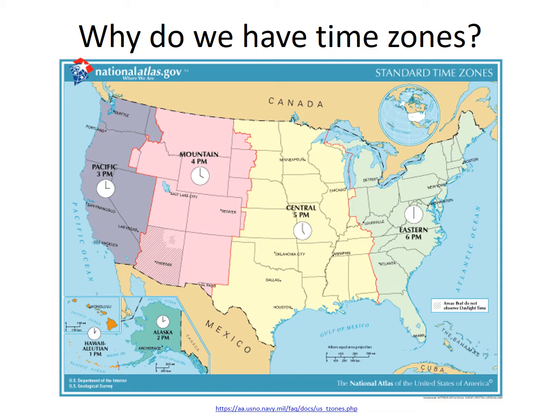Until the industrial age and spurred by travel, the time of day was a local matter. Every town set its official clock, if it had one, according to the local position of the sun. This served sufficiently until the introduction of the steam engine and rail travel, which made it possible to travel fast enough over long distances to require almost constant resetting of timepieces as a train progressed in its daily run through multiple cities.